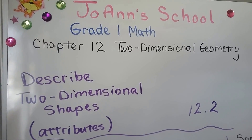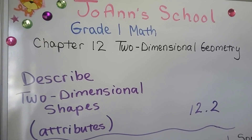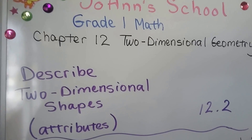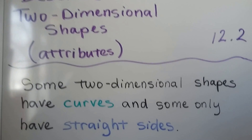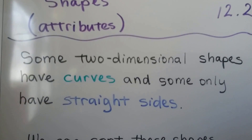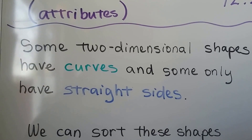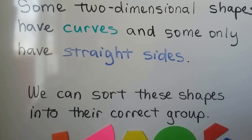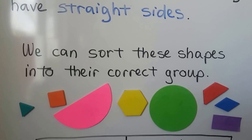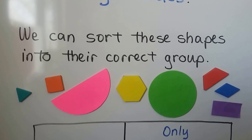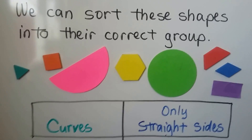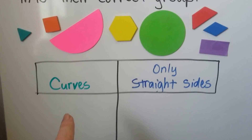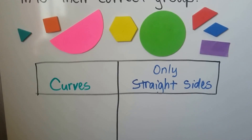Describe two-dimensional shapes. We're going to talk about the attributes of shapes. This is lesson 12.2. Some two-dimensional shapes have curves, and some only have straight lines, straight sides. We can sort these shapes into the correct group. Here we have a lot of shapes, and we're going to separate and sort them into curves or only straight lines.